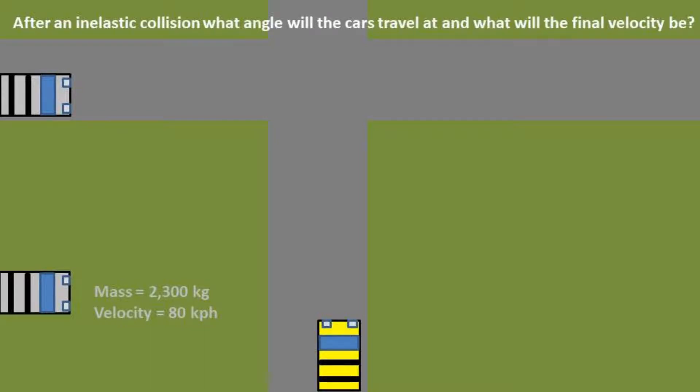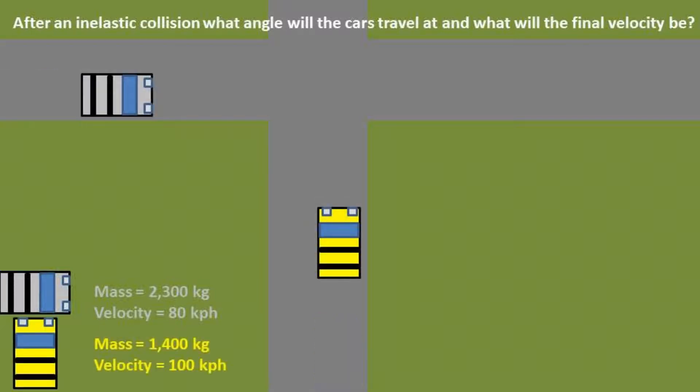In this problem, we have a gray car traveling at 80 kilometers per hour east, and it has a mass of 2,300 kilograms. At the same time, we have a yellow car that is traveling north at 100 kilometers per hour and has a mass of 1,400 kilograms.